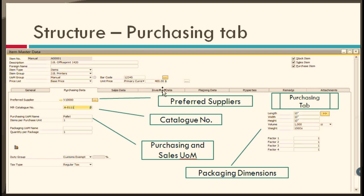Let us move to the second tab — the Purchasing tab — where you enter purchase-related information for an item. The highlighted fields include preferred supplier or vendor, catalog number, purchasing and sales UOM, and packaging dimensions. You can assign a preferred vendor for the item, and each time SAP Business One creates a recommendation, it enters the preferred vendor value automatically.